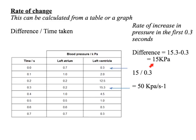So we want to know the rate of change — how quickly the pressure increases as the ventricle contracts. The difference is the biggest number take away the lowest: 15.3 minus 0.3 gives us 15 kilopascals — that's how much the pressure has increased by. Divided by the time taken (0.3 seconds): 15 divided by 0.3 gives us 50 kilopascals per second. So the pressure is increasing at a rate of 50 kilopascals per second when the ventricle is contracting.